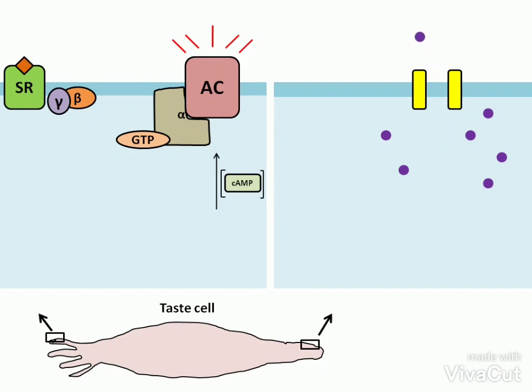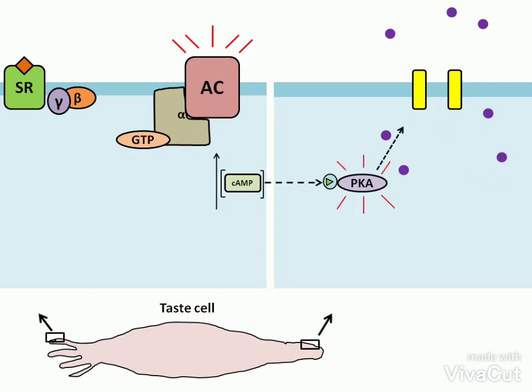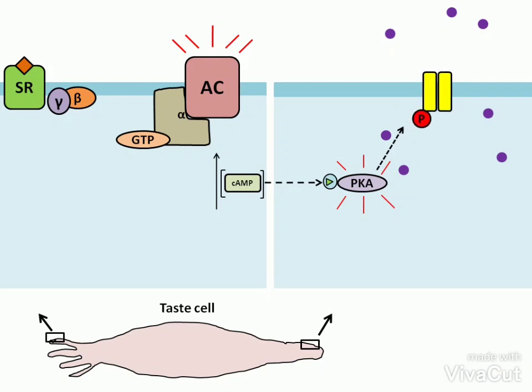The increased concentration of cAMP activates PKA. PKA then phosphorylates the potassium ion channel. This phosphorylation causes the potassium ion channel to be closed.